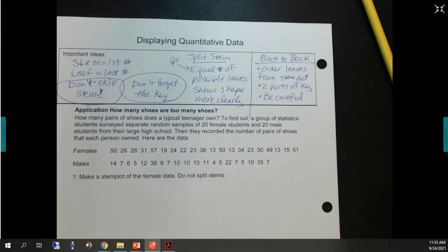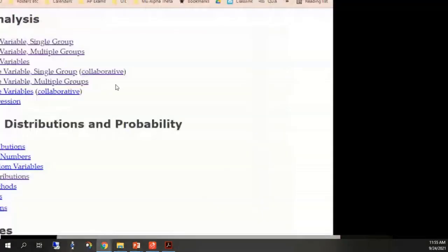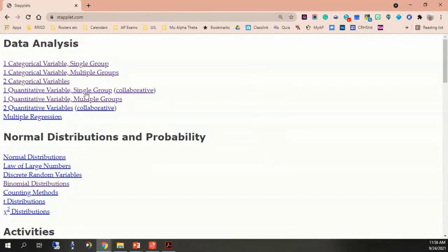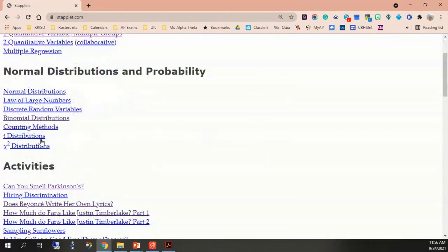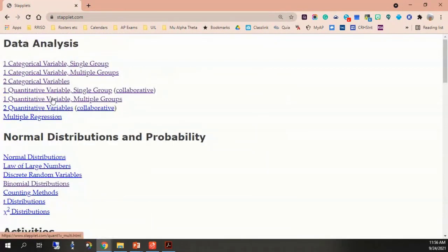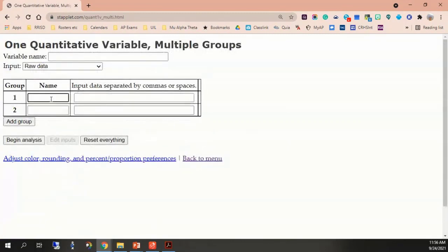Oh, and the way you can enter data, let me show you how to do that. So, if you wanted to start entering data. So, two quantitative, one quantitative variable, multiple groups. That's what you want. So, you can put the males, the list up here, and the females down here. Tell you what.